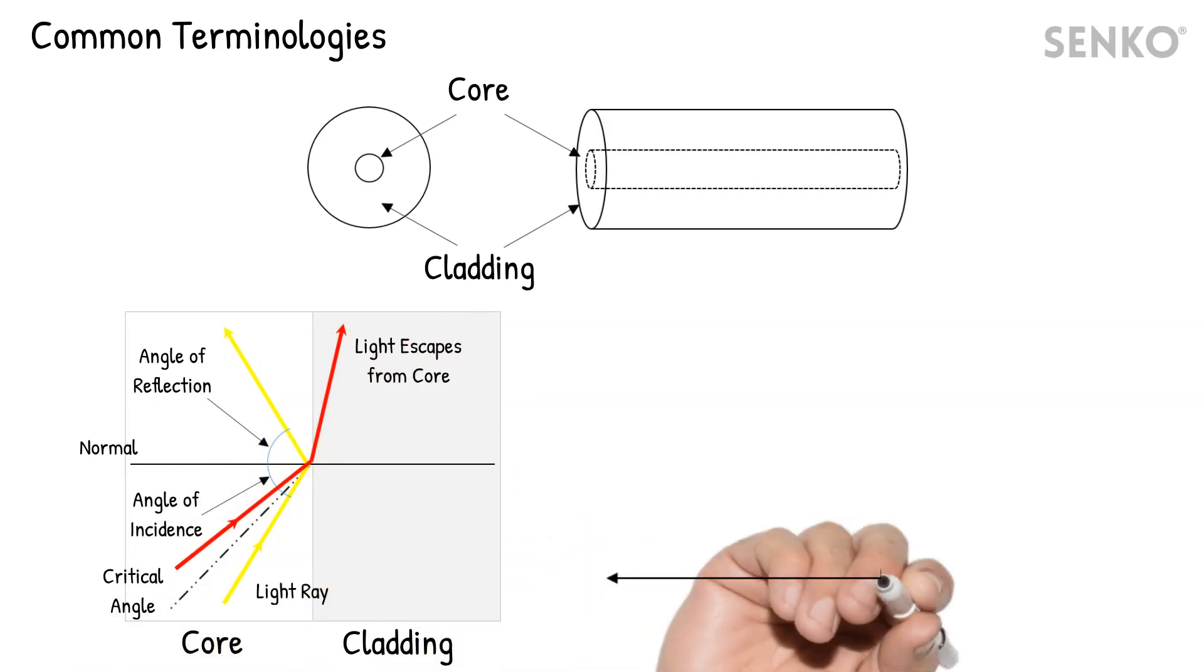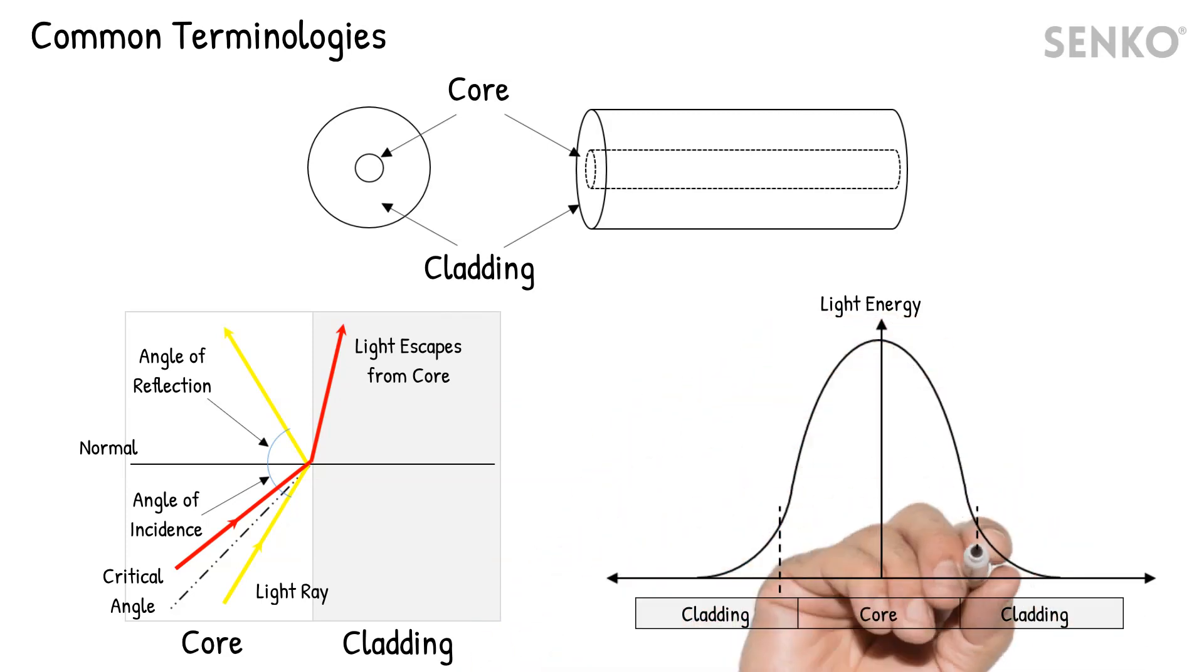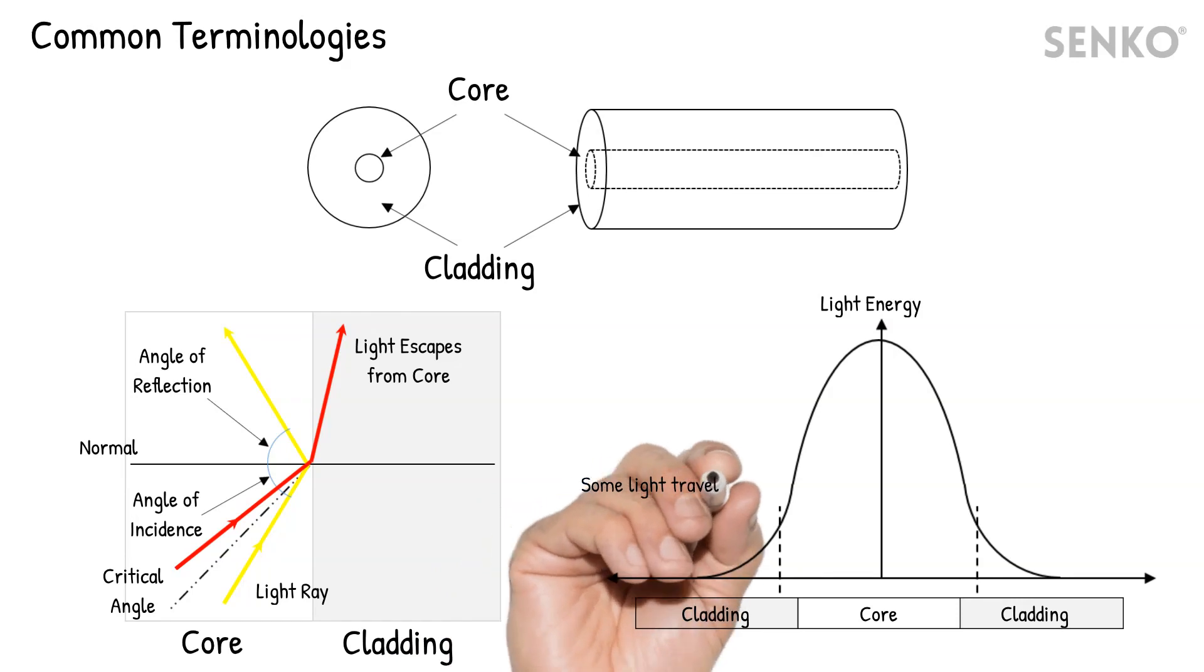Although light is supposed to travel only within the core, it doesn't fully stay in the core. This diameter of the light beam is known as the Mode Field Diameter, or MFD. The MFD is usually slightly larger than the core.